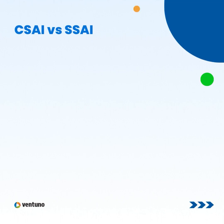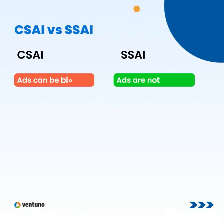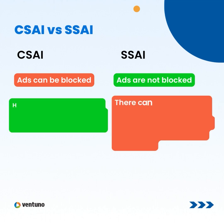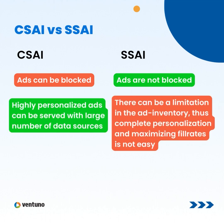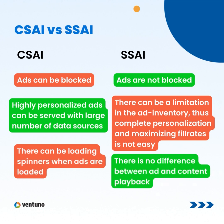What's the difference between the two? In CSI, the player has to explicitly call the ad servers, pause content playback, and start ad playback. Ad blockers can easily detect these calls and block ad playback effectively. On the other hand, in SSI, ads are inserted on the server side along with the actual video content, making it difficult for ad blockers to detect and interfere with the ad plays. In CSI, with a large number of data sources, highly personalized ads can be served. In SSI, there can be a limitation in the ad inventory, so complete personalization and maximizing affiliates are not easy.